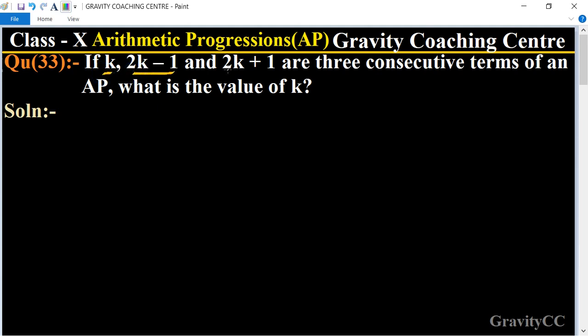k, 2k minus 1, and 2k plus 1 is in AP. So we know the formula: second term minus first term